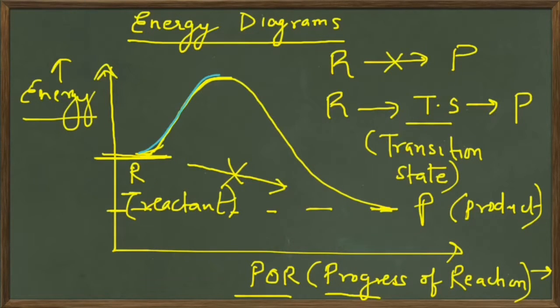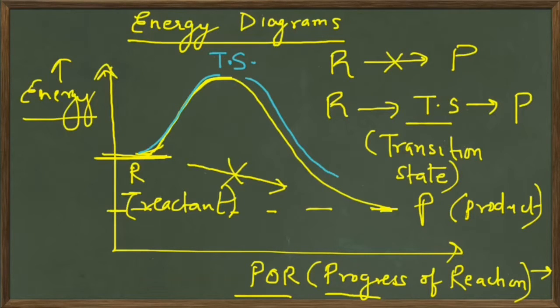The reactant first climbs up the hill to reach the transition state, and at the top of this hill we have the transition state. This transition state then changes into the product by releasing energy.